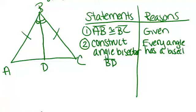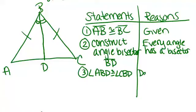So at this point, we now have another pair of congruent angles or our first pair of congruent angles. Angle ABD is congruent to angle CBD because of the angle bisector. So by definition of angle bisector, those angles are congruent.